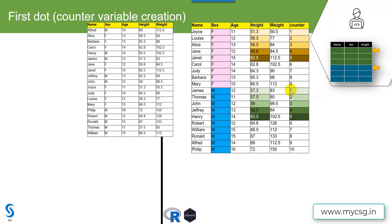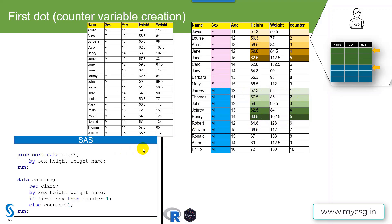The counter then gets incremented for all subsequent records. Similarly within males, I want the value of one in the counter variable for the student with the lowest height, and then it gets incremented for each ascending increase in the height variable. To do that in SAS, we first need to make sure that the records are ordered in the way we require — ordered based on height values in ascending manner within each sex group.